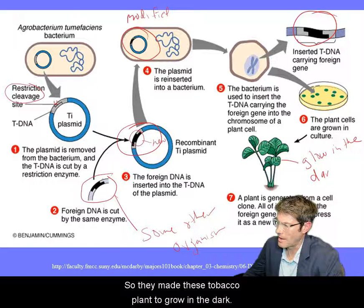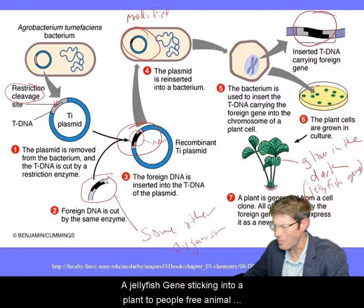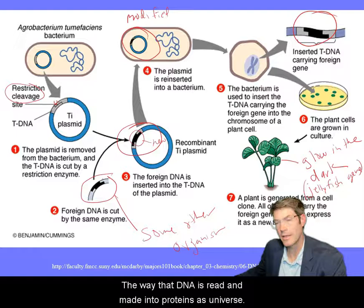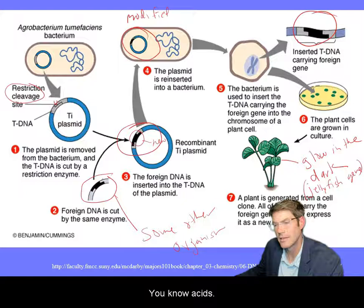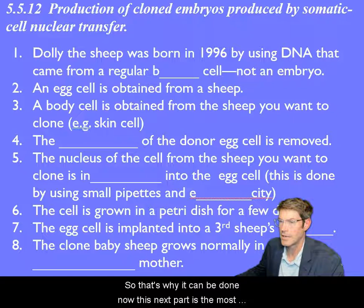Tobacco is used a lot as a test organism in the laboratory. They made tobacco plants that could glow in the dark using a gene from a jellyfish inserted into the plant. People freaked out — an animal cell gene in a plant? But the way DNA is read and made into proteins is essentially universal, which is why it can be done.